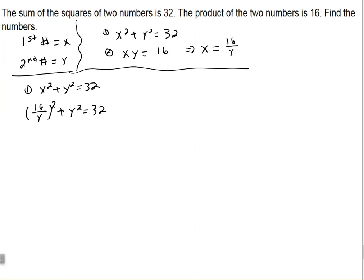And that was squared because it was x squared. So let's go ahead and square that 16 over y. 16 squared is 256. And y squared is simply just y squared.